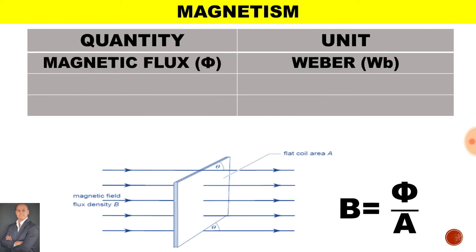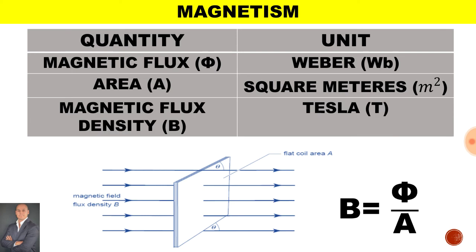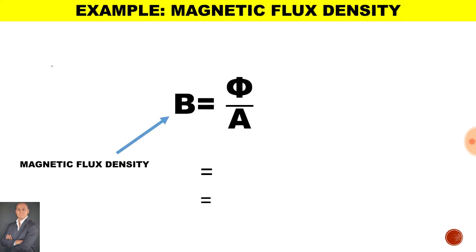The magnetic flux is measured in Weber, the area measured in meters squared, and the magnetic flux density measured in Tesla. Once again looking at the formula we have the magnetic flux density, the magnetic flux, and the area.